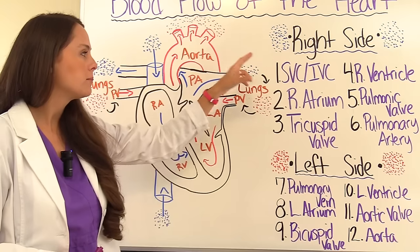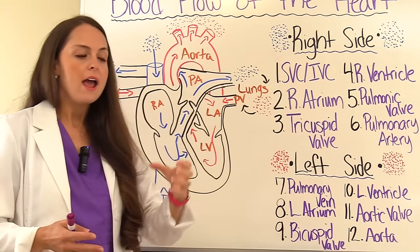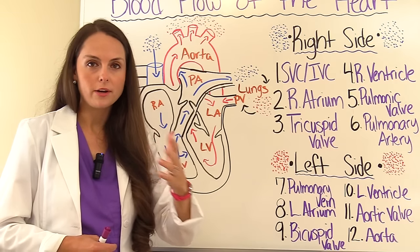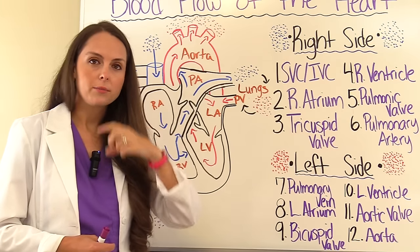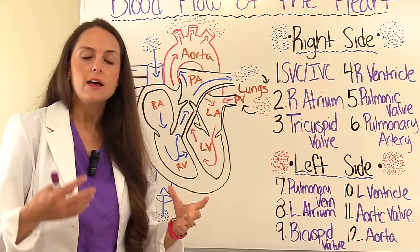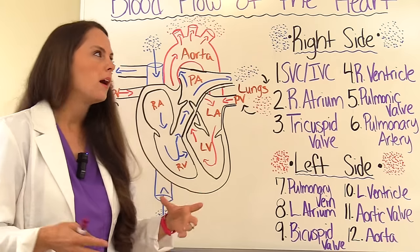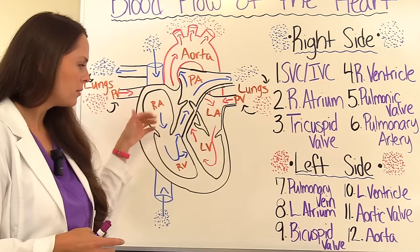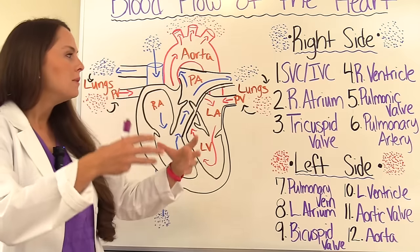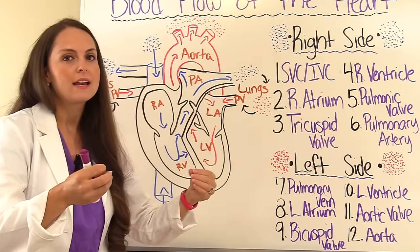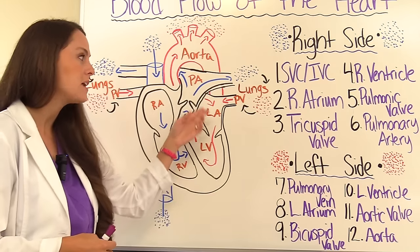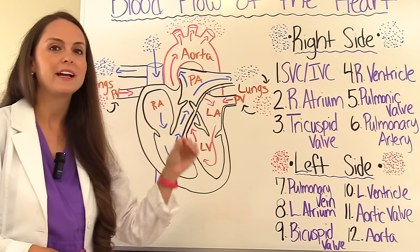The unoxygenated blood goes through the lungs, where on your alveoli sacs there are capillaries and gas exchange occurs. Oxygen that you're breathing in crosses over and attaches to those red blood cells, while the carbon dioxide that's built up in your blood crosses over and you exhale it. So the blood is now oxygenated and it leaves the lungs to go into the left side of the heart through the pulmonary vein.